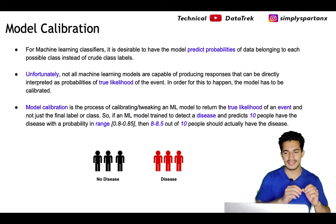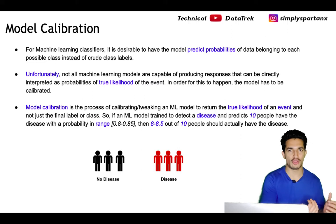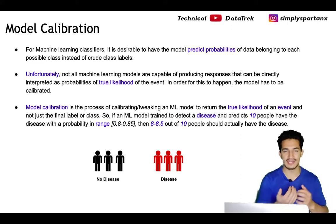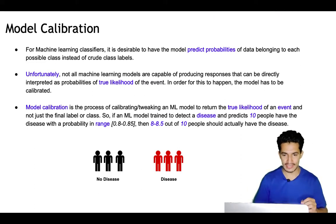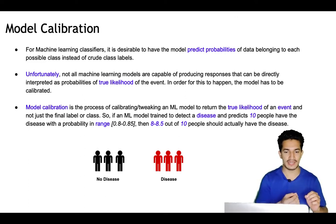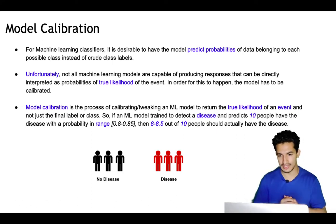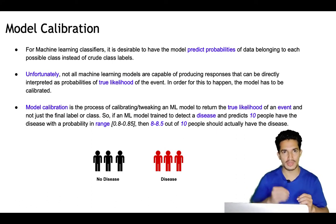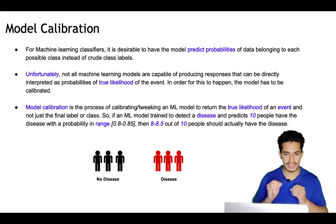For a machine learning classifier, it's desirable to have the model predict probabilities instead of just crude final class labels. But unfortunately, not all machine learning models are capable of producing responses that can be directly interpreted as probabilities of the true likelihood of the event. In order for that to happen, we need to calibrate the ML model.